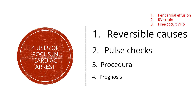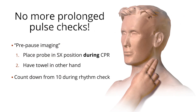Now that we've discussed the three reversible causes of cardiac arrest on ultrasound, let's move on to pulse checks. It's important to mention that ultrasound should not be prolonging pulse checks, and there are two interventions we can do to minimize the time the probe is on the chest. The first is pre-pause imaging — you'll place the probe in the subcostal or subxiphoid position during CPR to find your window before the rhythm check, save your clip, and then interpret the image after CPR resumes. You should also have a towel in your non-dominant hand to wipe off the gel, and have someone count down from 10 during the rhythm check so that when they hit the two-second mark, your probe is off the patient and you can resume compressions by the 10-second mark.